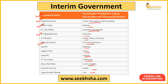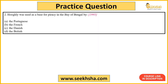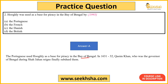Jagjivan Ram held the Labour portfolio — this is most important; the tick-marked names are essential but try to remember all if possible. Second question: Hooghly was used as a base for piracy in the Bay of Bengal by — A. Portuguese, B. French, C. Danish, or D. British. These are the types of questions whose answers you won't find easily. The correct answer is option A — Portuguese, who used Hooghly as a base for piracy. In 1631-32, Qasim Khan ultimately suppressed them.